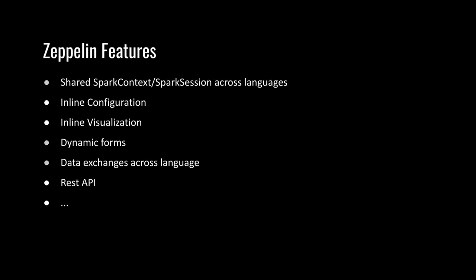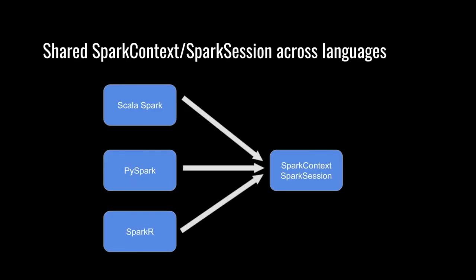Now let's talk about some advanced features of Zeppelin beyond running Spark code. The first feature is the shared Spark context or Spark session across languages. We know that Spark not only has a Scala API, it also has Python API and R API. In Zeppelin, all three languages share the same Spark context, which means data sharing. For example, you can register a Spark table in Scala and then access that table in PySpark or SparkR.